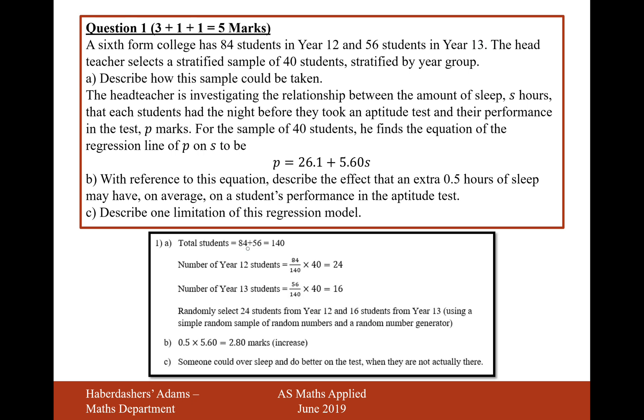What we need to first work out is the number of total students. That's 140 students in total. Now, the proportion of them that are year 12 students is 84 out of 140. Then we're going to multiply that by 40 because we want that proportion of 40 students, and that will get us about 24 students.